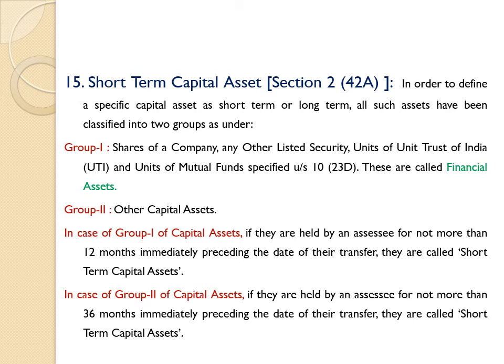So here are two views. The first view is related to financial assets: the period considered is not more than 12 months. For Group 2, we are considering other capital assets — capital assets other than financial assets — where the period to be considered is not more than 36 months.